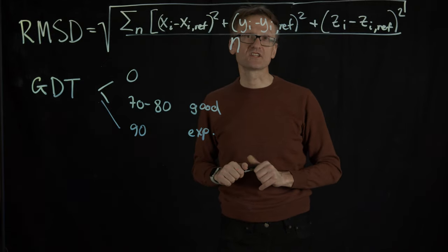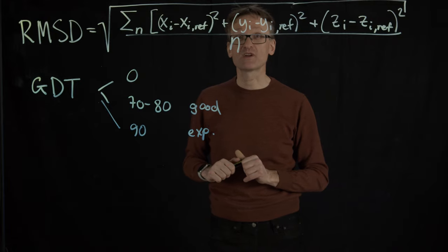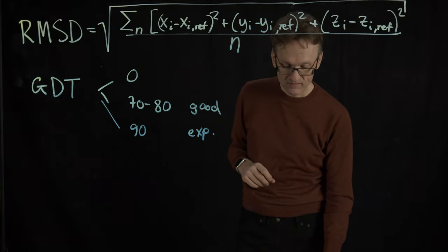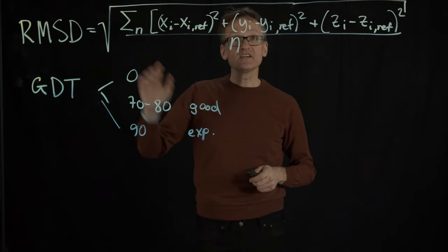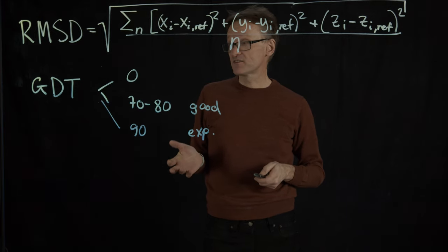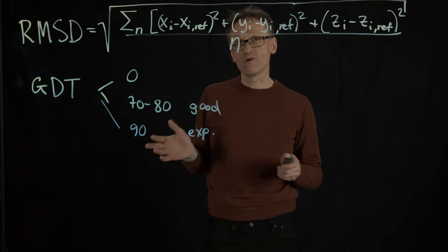There is a reason for mentioning that now. I will come back to it later. For now you can forget about it. The RMSD, it turns out, is intimately related to the sequence similarity. Not one on one but on average.